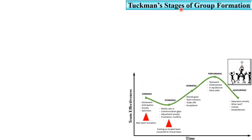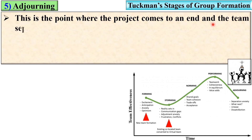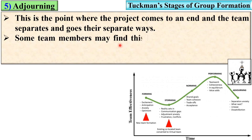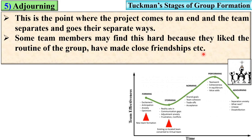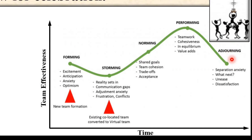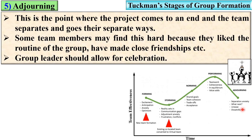The last stage of group formation is adjourning — simply put, separating. This is the point where the project comes to an end and the team separates and goes their separate ways. Some team members may find this hard because they like the routine of the group and have made close friendships. Group leaders should allow for celebration sometimes. Characteristics at this stage include separation, anxiety, uncertainty about what's next, and unease for those who valued the group routine.